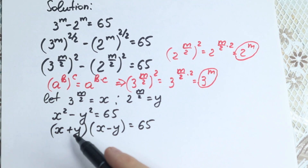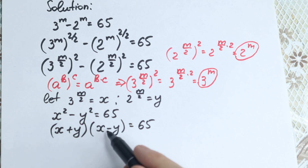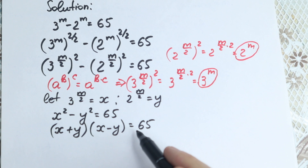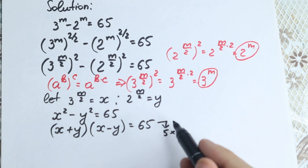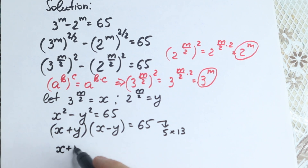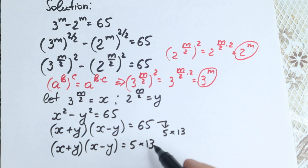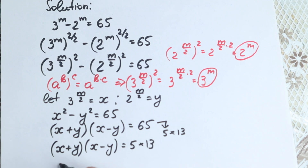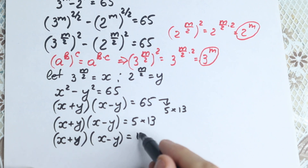We have a product on the left-hand side — two numbers multiplied together — equal to 65 on the right. Let's express 65 as a product: 5 times 13. So x plus y times x minus y equals 5 times 13. Since x plus y is larger than x minus y (sum vs. difference), we assign x plus y equals 13 and x minus y equals 5.